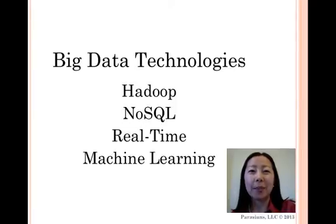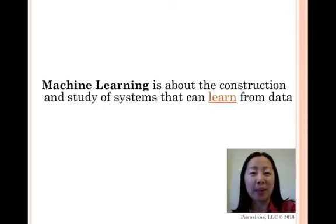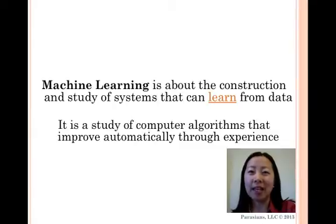Machine learning, a branch of artificial intelligence, is about the construction and study of systems that can learn from data. For example, a machine learning system could be trained on email to learn to distinguish between spam and non-spam messages. After learning, it can then be used to classify new messages into spam and non-spam folders.